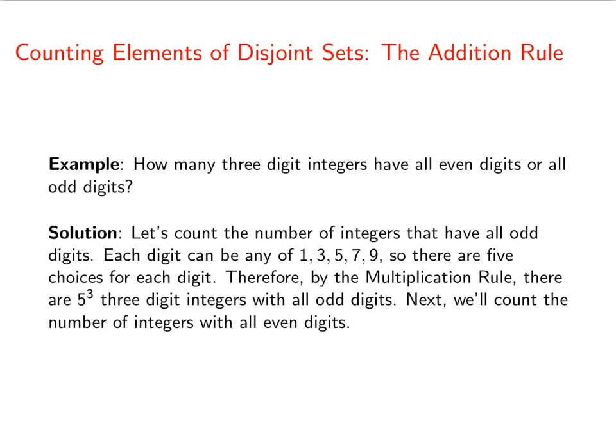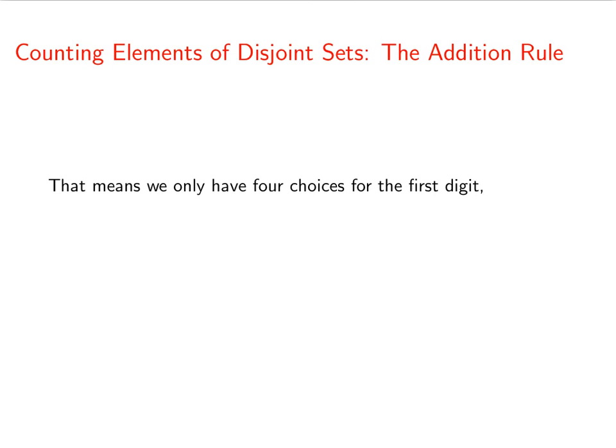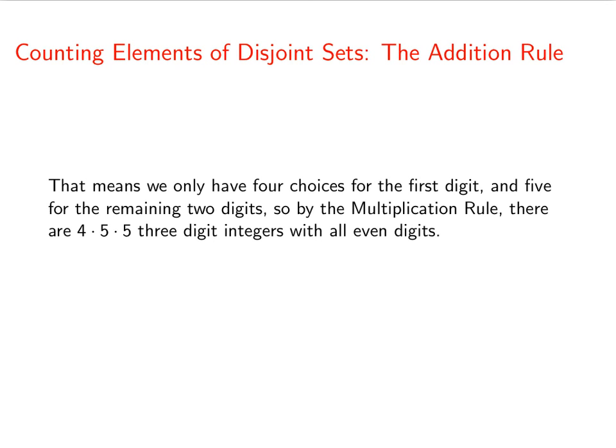Now we're going to do the number of integers with all even digits. This is slightly different because the leading digit cannot be zero, otherwise it would not be a three-digit number. Since we're not allowed to have zero as the leading digit, we only have four choices for the first digit. But then we have five choices for the remaining two digits. So the multiplication rule tells us there are 4 × 5 × 5 three-digit integers that have all even digits.